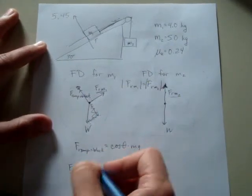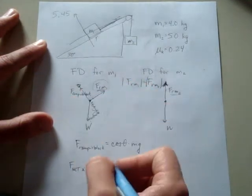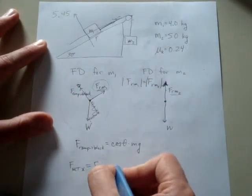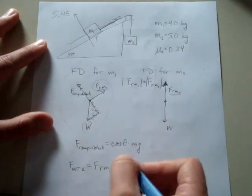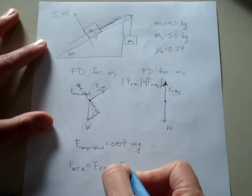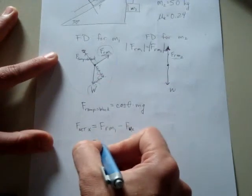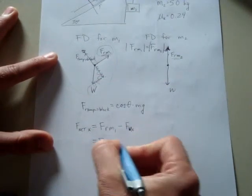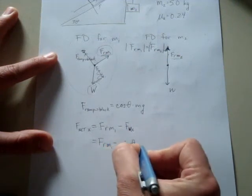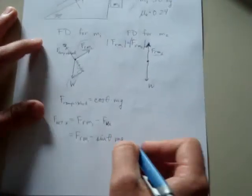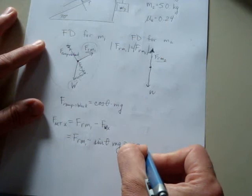We know that the net force in that direction is going to be equal to the force of the rope on mass 1, we can call that positive, minus the x component of the weight. The x component of the weight will be equal to sine of theta times mass times gravity, and that is going to be equal to the acceleration of block 1 along the x direction.